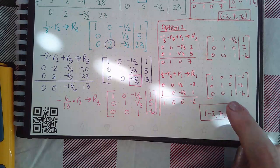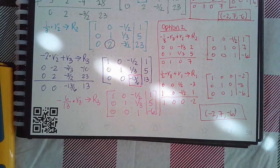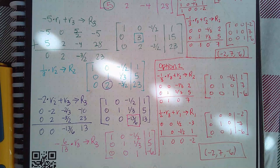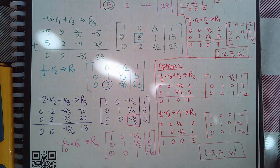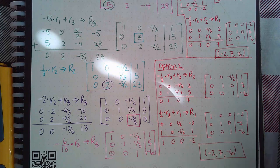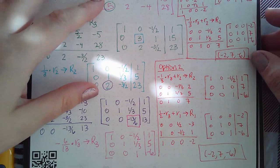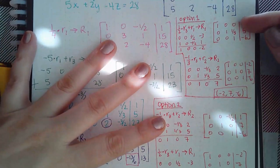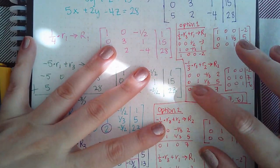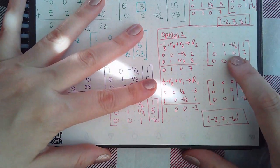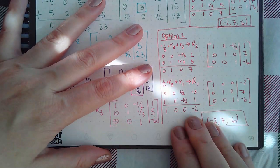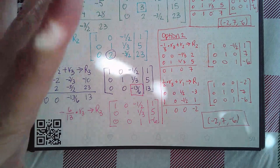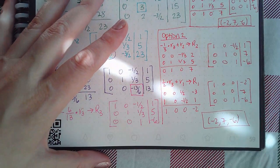You notice you get the same answer: x equals negative two, y equals seven, and z equals negative six — the exact same answer as before. It doesn't matter the order you go in. But because you're completing this alongside the software, you have to pay attention to which one Alex did — did Alex have the zero up in row one first, forcing option one, or did Alex have the zero in row two first, forcing option two? Pay special attention to that.